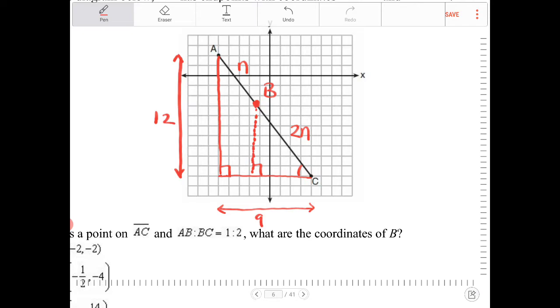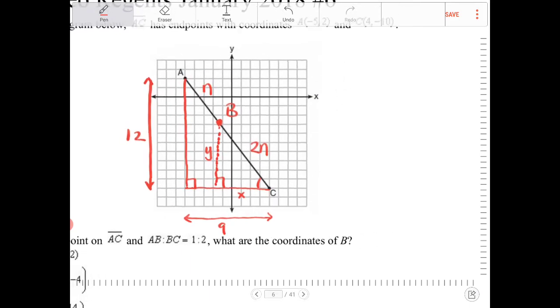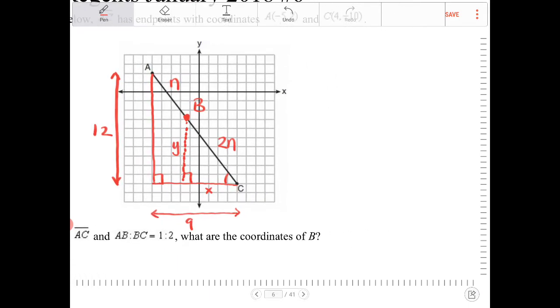So I don't know where point B is, but I'm going to call the horizontal component of the small right triangle X. And I'm going to call the vertical component of the small right triangle Y. Again, these two triangles are similar. So therefore, the corresponding sides will share a uniform ratio. So if I take the base of the small right triangle and compare that with the base of the large triangle, that's X over 9, that proportion should hold true with the vertical component, so Y over 12. And this same ratio will hold true for the hypotenuse as well. So the hypotenuse of the small right triangle is 2N, and the hypotenuse of the large right triangle is 3N.